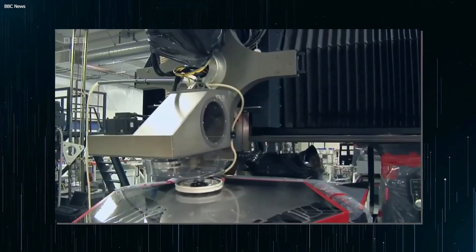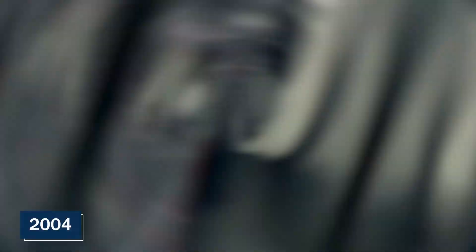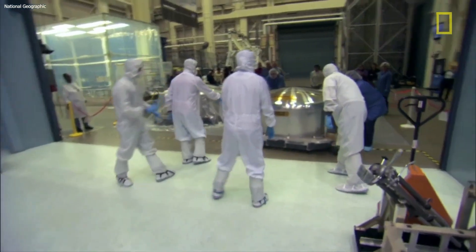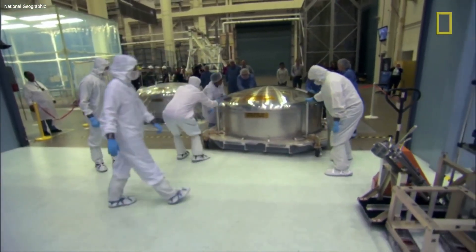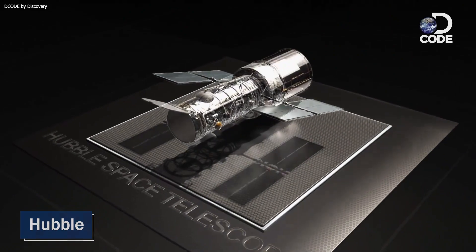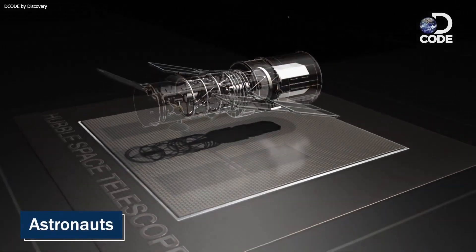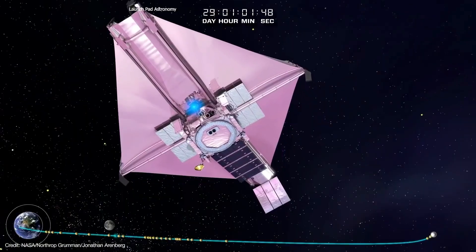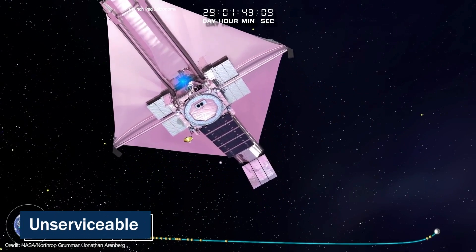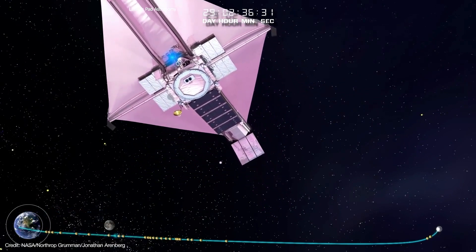As construction on the Webb Telescope began in 2004, engineers and astronomers were faced with the challenge of creating new technologies and processes to meet the demanding scientific requirements of the mission. Unlike Hubble, which could be repaired and upgraded by astronauts working from Earth, Webb would have to operate at an unserviceable distance while still meeting its many demands.